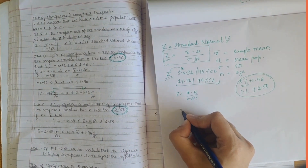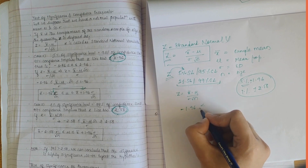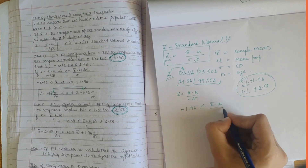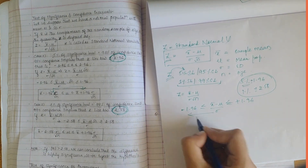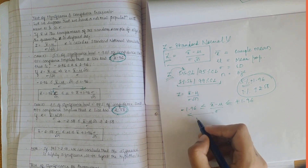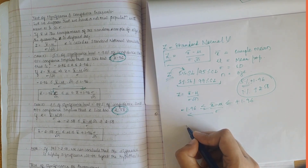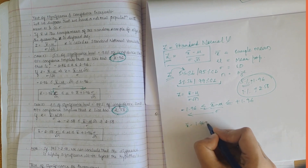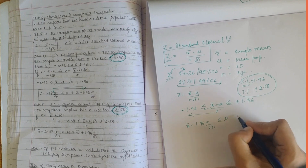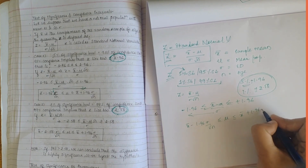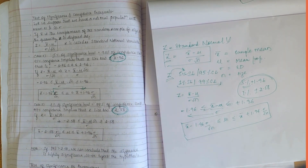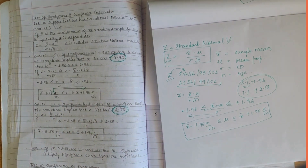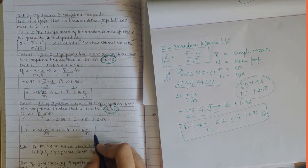Writing it out: z lies between minus 1.96 and plus 1.96, that is minus 1.96 is less than or equal to (x-bar minus mu) divided by sigma over root n, which is less than or equal to plus 1.96. Rearranging, mu lies between x-bar minus 1.96 times sigma over root n and x-bar plus 1.96 times sigma over root n. So the population mean varies within these two interval bounds.